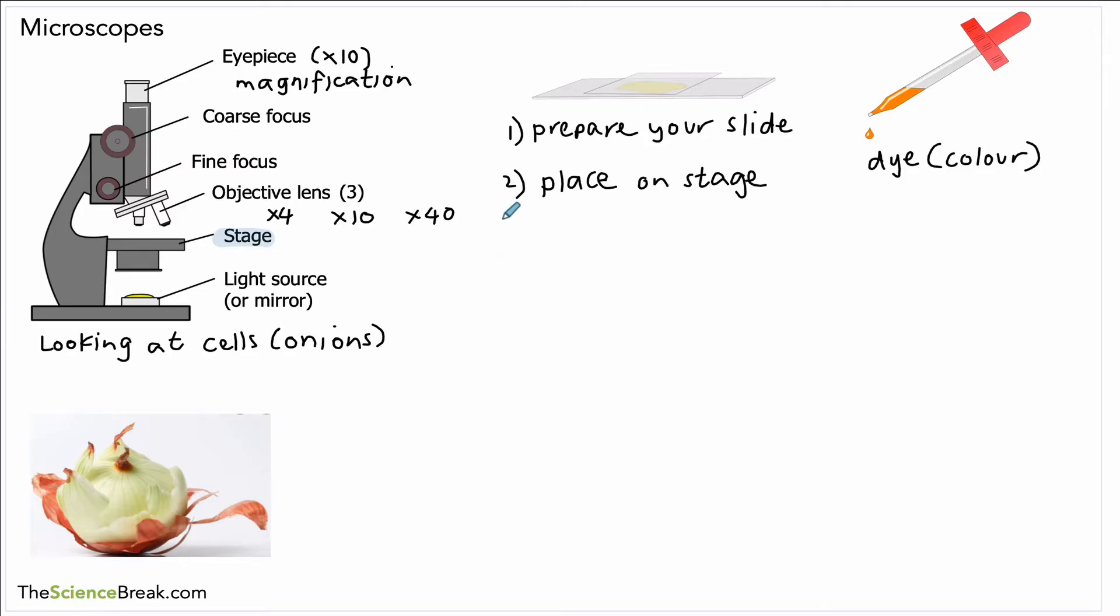Then we would use our smallest objective lens - in this case it's times 4 objective lens. Then we would use the coarse focus to bring the stage up as far as it will go. Don't force it more than it will go, but we bring it high up as far as it will go.